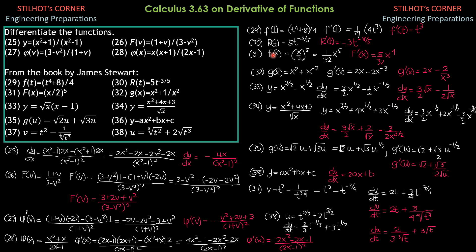Problem 31: F(x) = (x/2)⁵. Simplifying first gives (1/32)x⁵. So F′(x) = (1/32)(5x⁴) = 5x⁴/32.